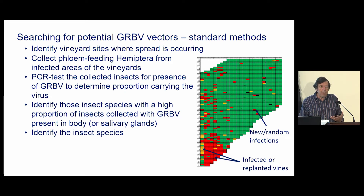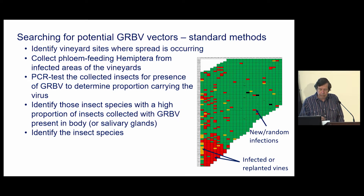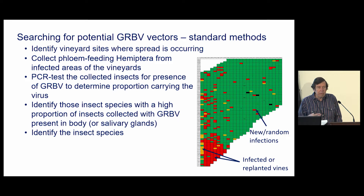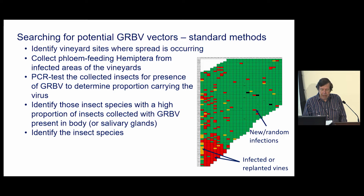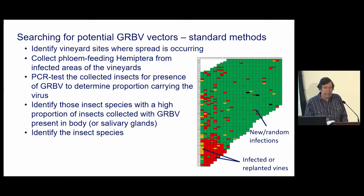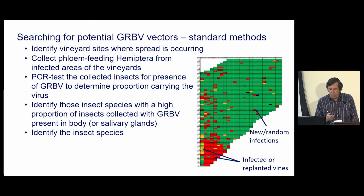We tried to identify vineyards where we saw this sort of pattern or where we confirmed that spread was occurring. We would be collecting phloem-feeding hemiptera from the infected areas of the vineyard, and we would use PCR to test the insects for the presence of red blotch virus. We would identify insect species that had high proportions of the virus in their bodies, and more recently we're using salivary glands as an indicator.